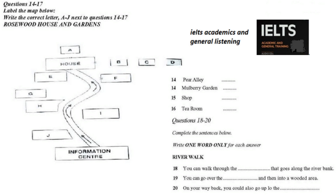Next to this is the greenhouse where some exotic plants and fruits are grown. Follow the path around the second corner and on your right you will see the entrance to the mulberry garden with its five-hundred-year-old tree. Past the mulberry garden, follow the path until you reach the front of the house.